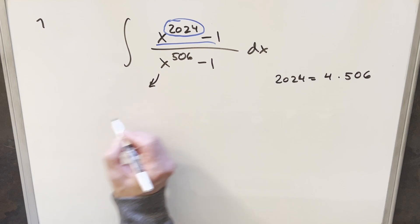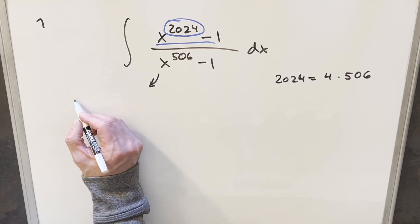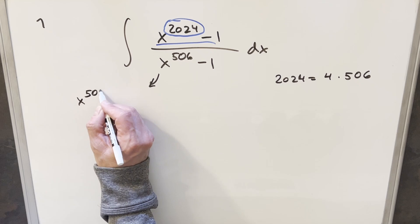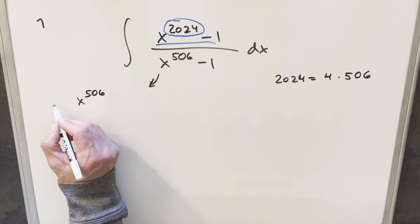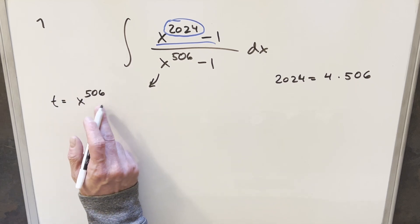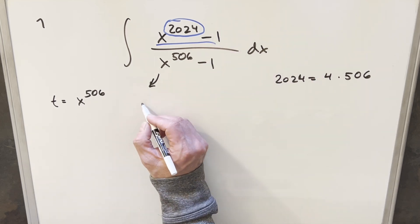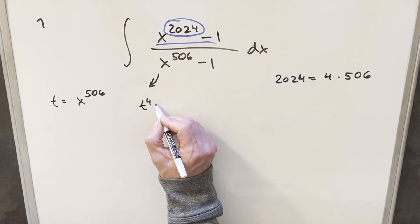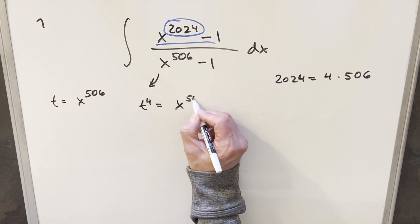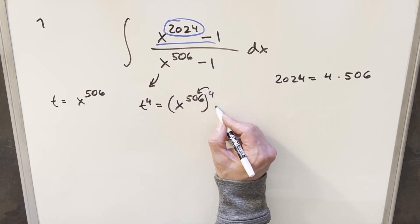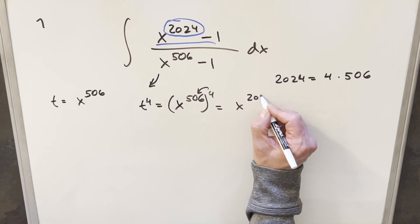So what I want to do is come down here and just deal with algebra for a minute. So what I'm going to do is we'll just do a substitution, but we're not going to take the derivatives, we're just doing algebra. So for the substitution, I'm going to call t equal to x to the 506. But then because we know 4 times 506 is 2024, if I look at t to the 4th, I can look at x to the 506 to the 4th. But then with exponent properties, this is x to the 2024.